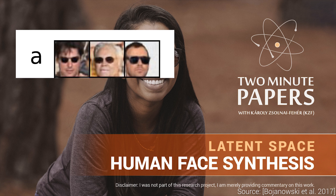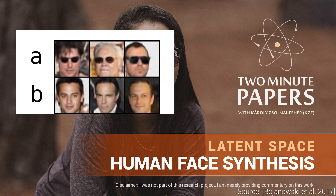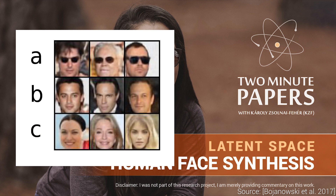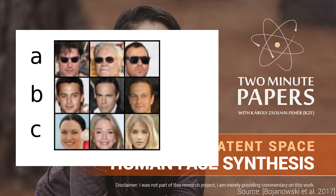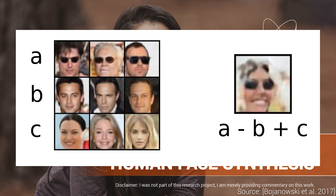It is also able to perform simple arithmetic operations between any number of data points. For instance, if A is males with sunglasses, B are males without sunglasses, and C are females, then A minus B plus C is going to generate females in sunglasses. It can also do super resolution and much, much more.